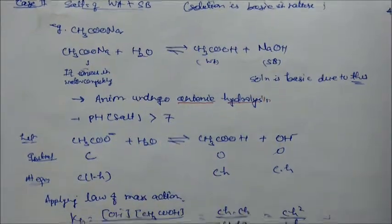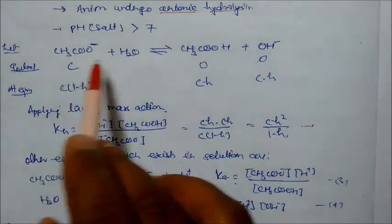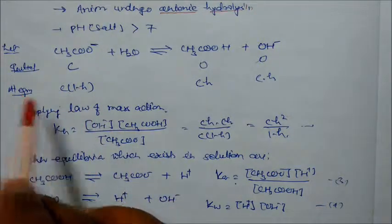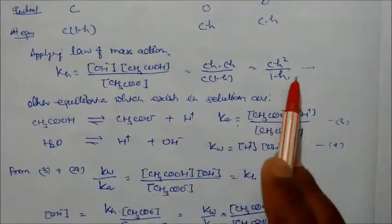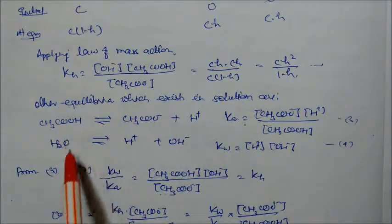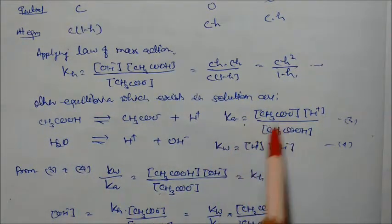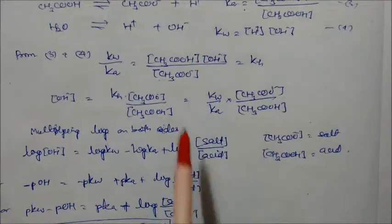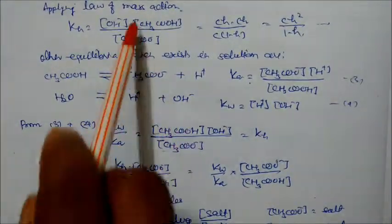We will derive why pH > 7 for anionic hydrolysis. The acetate ion reacts with water to form acetic acid + OH⁻. Initial concentration C; at equilibrium: C(1−H), CH, CH. Applying the law of mass action: KH = CH² / (1−H). Other equilibria: acetic acid (weak acid) also dissociates, giving Ka; water gives KW. Dividing KW by Ka gives KH = KW / Ka.